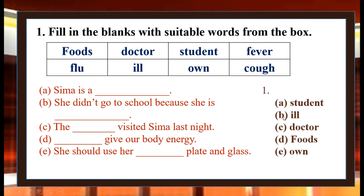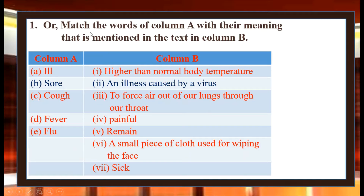The answers are: 1 — A, student. 2 — B, ill. 3 — Doctor. 3 — Foods. 4 — E, own. 5 — Guest.